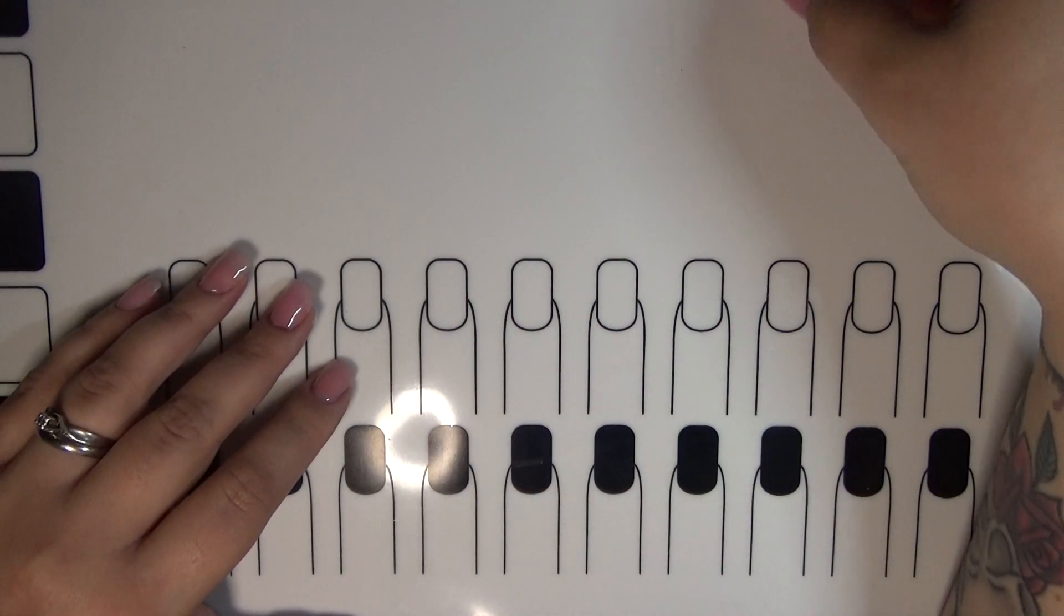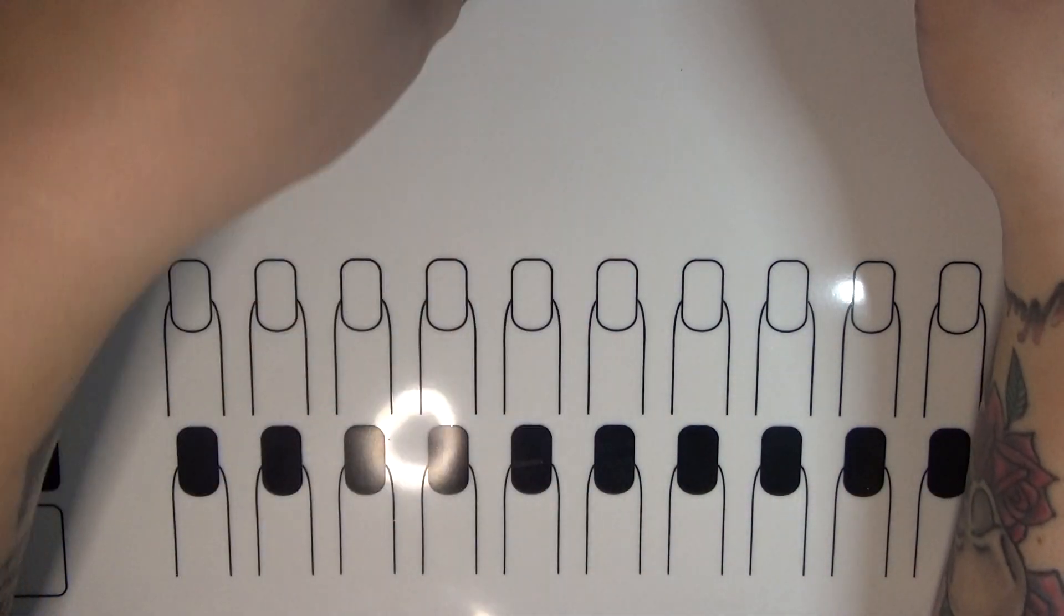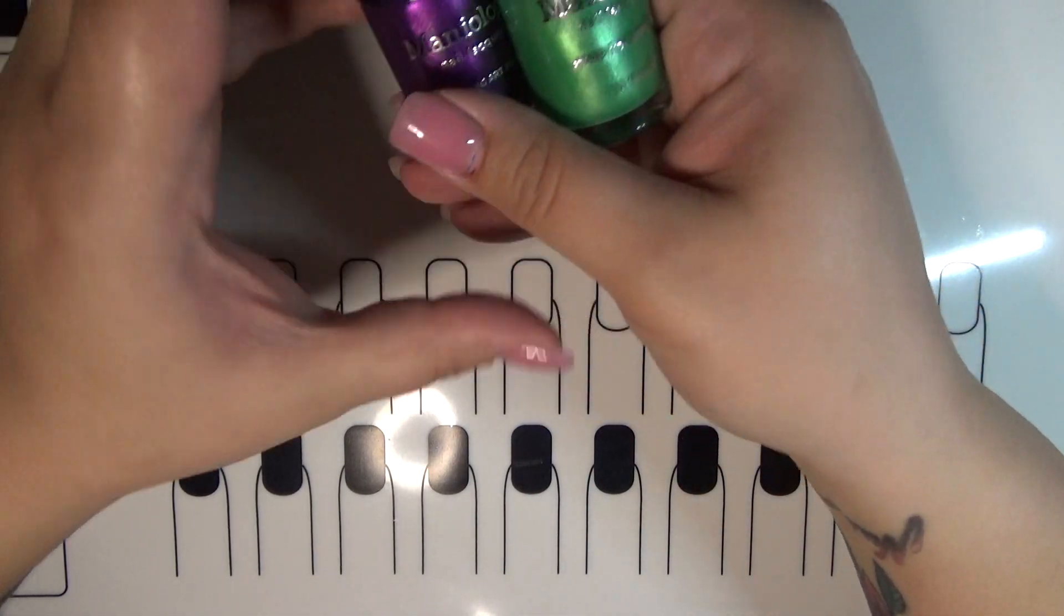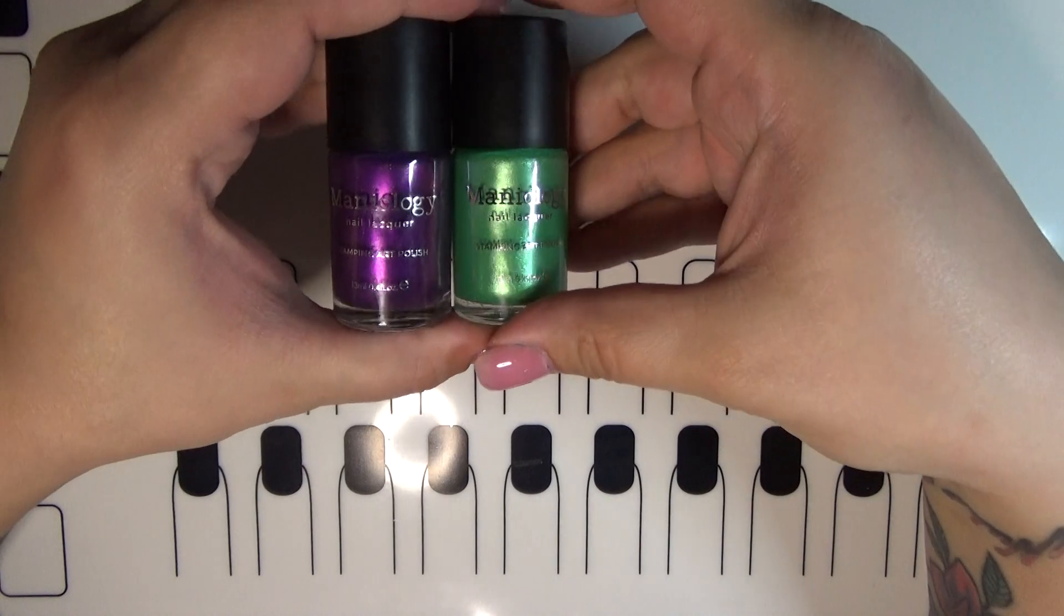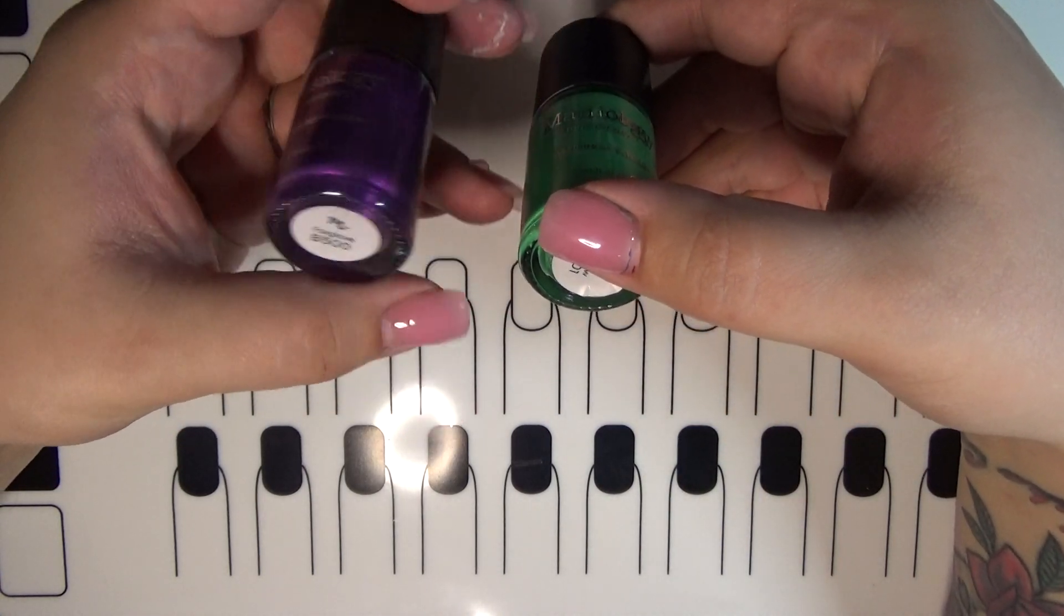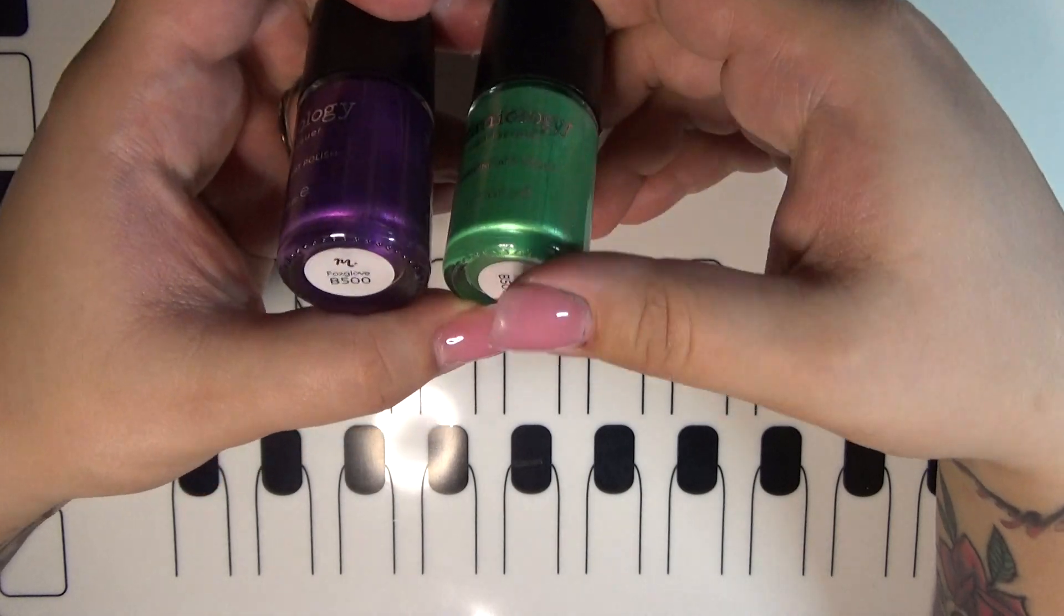Hello everyone, welcome back to Technical Tuesday. Today we're going to do swatch comparisons for December's Manny Me box from Maniology, which is Foxglove B500 and Willow B501.